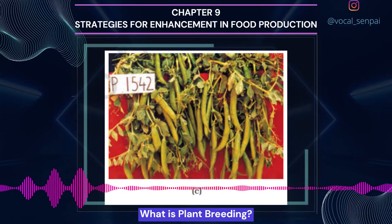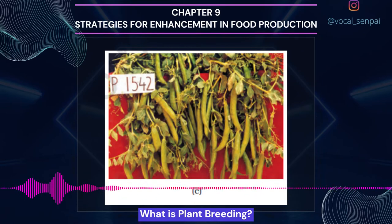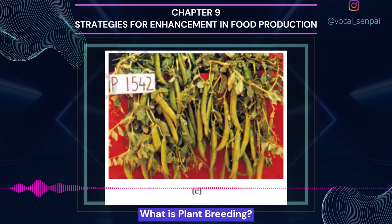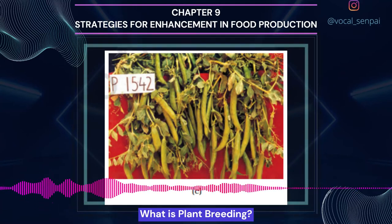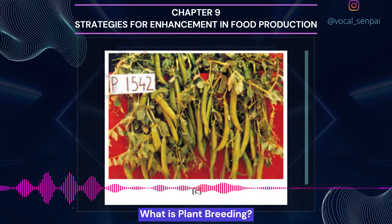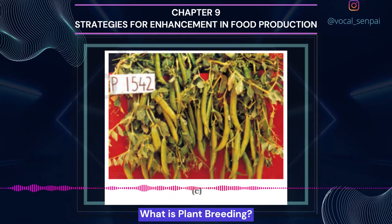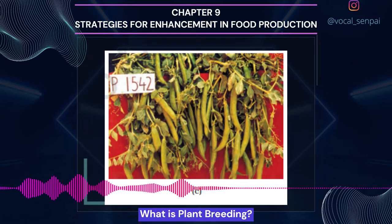After India's independence, one of the main challenges was producing enough food for the increasing population. The development of several high-yielding varieties of wheat and rice in the mid-1960s led to a dramatic increase in food production — this phase is often referred to as the green revolution. During 1960-2000, wheat production increased from 11 million tons to 75 million tons while rice production went up from 35 million tons to 89.5 million tons. This was due to the development of semi-dwarf varieties of wheat and rice. Nobel laureate Norman E. Borlaug developed semi-dwarf wheat at the International Center for Wheat and Maize Improvement in Mexico.